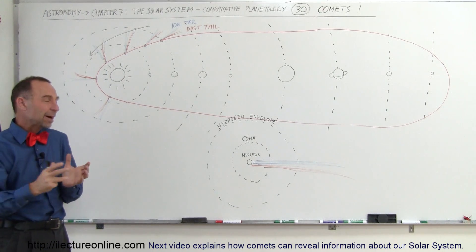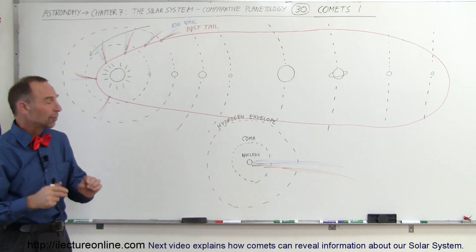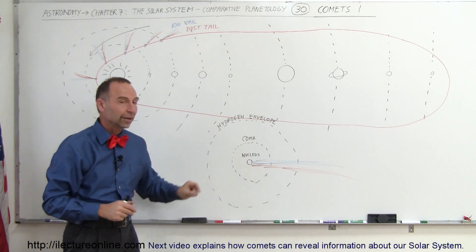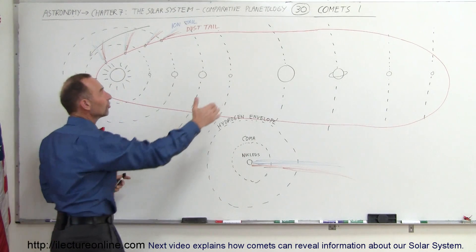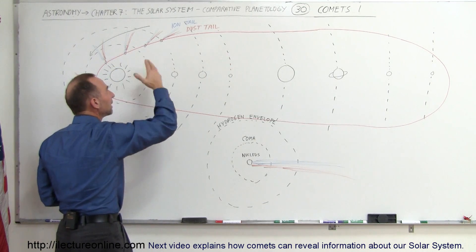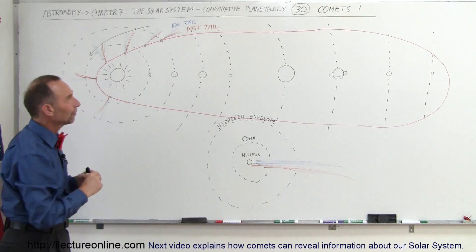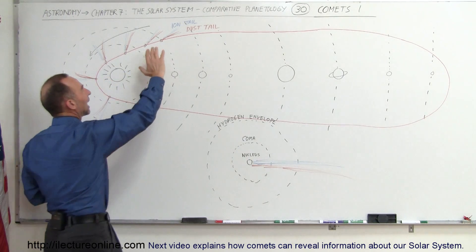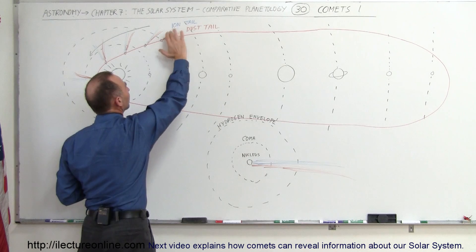Comets are usually anywhere from about a mile to maybe 10 kilometers across, so that's called the nucleus. As the nucleus gets close to the sun, the heat of the sun begins to evaporate or sublimate the ice on the surface of the comet and you start seeing an ion tail coming out.